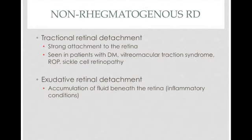There are four causes of non-rhegmatogenous retinal detachment — no tear, but the retina is still detached from the RPE. The first is traction from the vitreous without a tear, seen in patients with diabetes, vitreomacular traction syndrome, retinopathy of prematurity, and sickle cell retinopathy. The second is exudative retinal detachment, where an exudate accumulates behind the retina, seen in patients with inflammatory conditions.